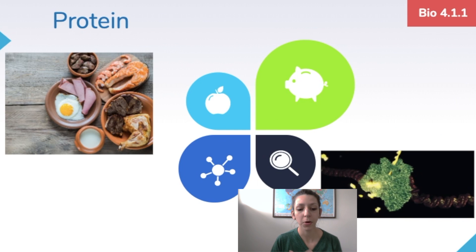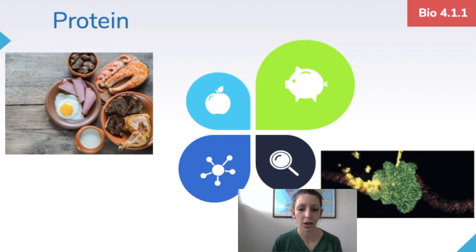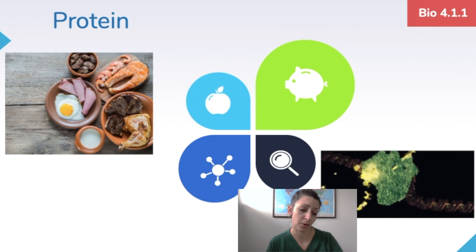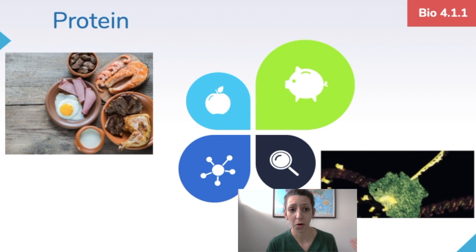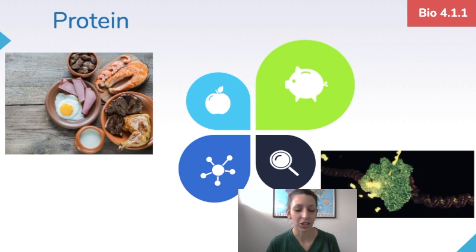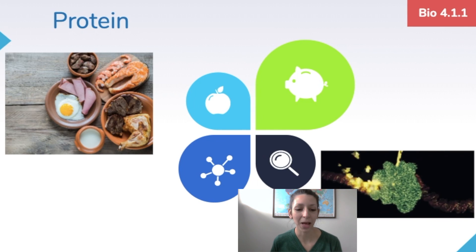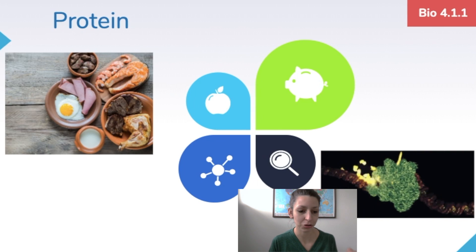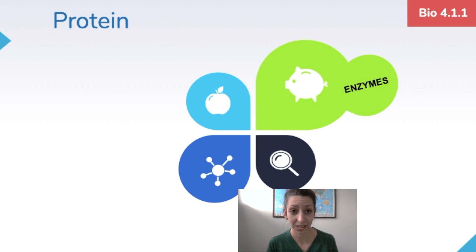Next, we have proteins. Proteins are going to do tons of different jobs within the cell — not just making your muscles big. They perform lots of functions including transport proteins, proteins involved in cellular respiration, proteins involved in making other proteins, and enzymes, which we'll talk about as well. Proteins are made of amino acids — that is their structure. Enzymes are just special types of proteins, and all enzymes are proteins.